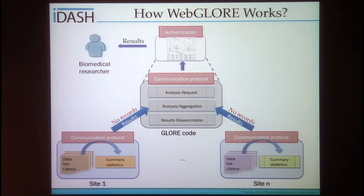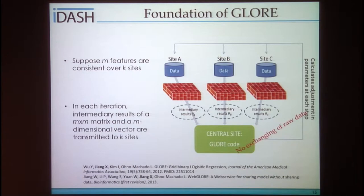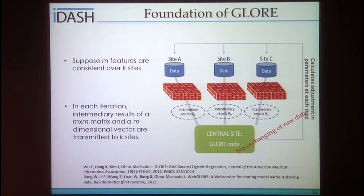Today's focus is on the logistic regression model. We built a WebGlow service — a web service providing users from different locations the ability to collaborate in an efficient and secure manner. Specifically, this web service only exchanges an M-dimensional gradient vector and an M-by-M Hessian matrix from the client to the server, and an M-dimensional parameter vector from the server to the client, up to 20 iterations.